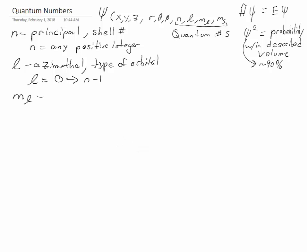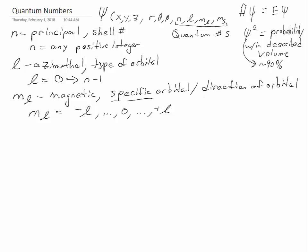m sub l is the magnetic quantum number. This is the specific orbital, or the direction of the orbital, and m sub l can have values from negative l up to 0 up to positive l. This is associated with the specific orbital and the direction in terms of which axis the orbital lies along, or which axes the orbital lies along.